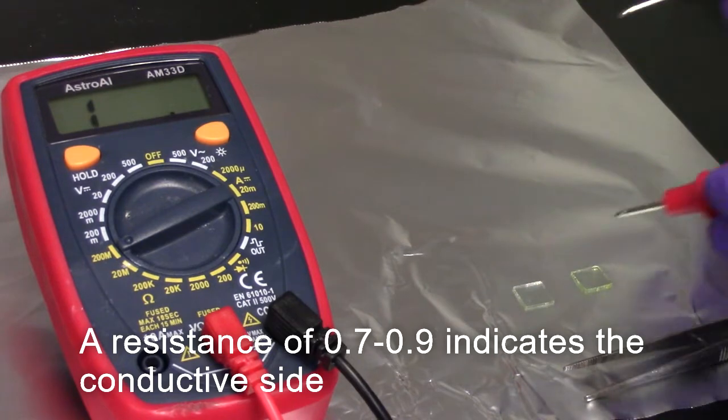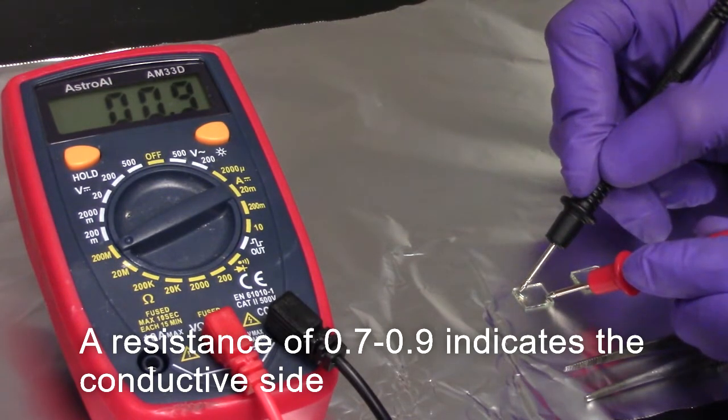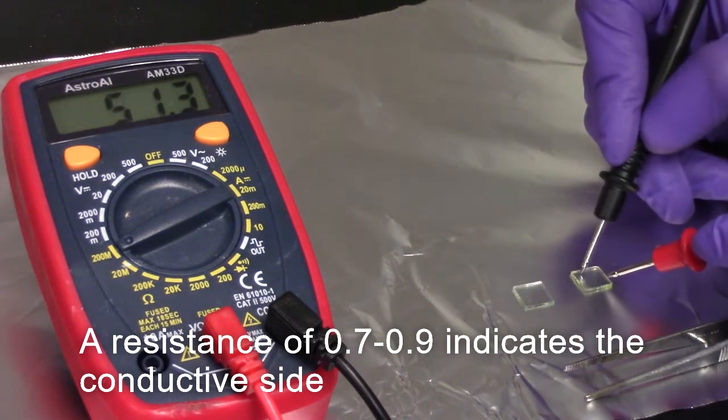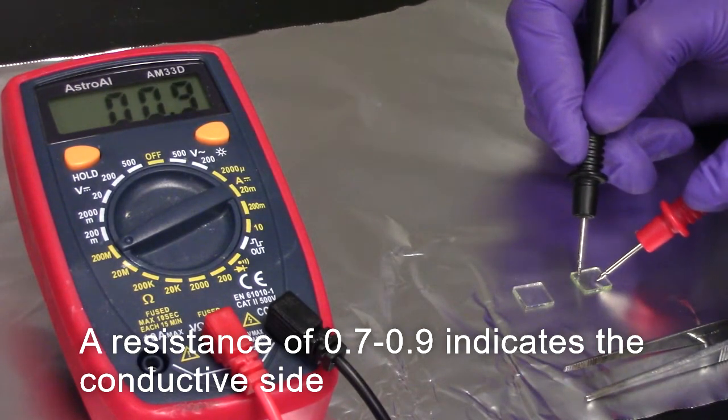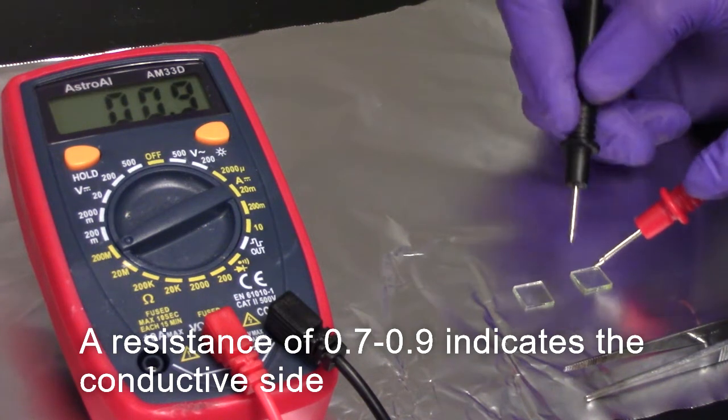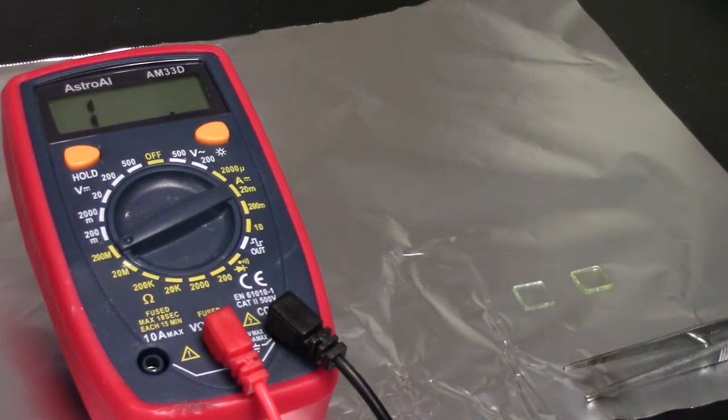Upon our second attempt on the other side, we can see that the measure of 0.9 appears on the voltometer, indicating the conductive side. The glass on the right, once again we can see, gives a measure of 0.9, thus is already facing up on the conductive side.